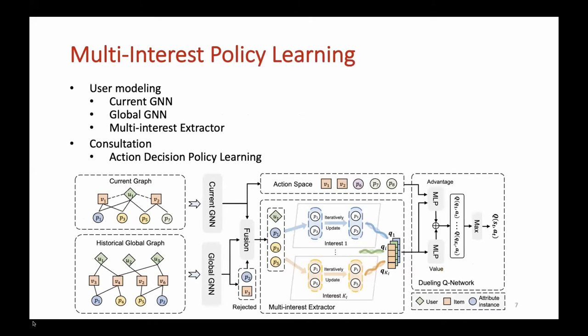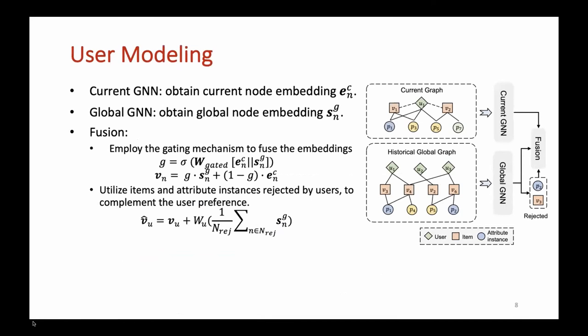The multi-interest policy learning has several key modules. Current GNN, global GNN, and multi-interest structure are employed to model user interest. Action decision policy learning is proposed to decide the action. We use current GNN to obtain current node embedding. We use global GNN to obtain global node embedding. We employ the gating mechanism to fuse the node embeddings. We utilize items and attribute instances rejected by users to complement the user preference.